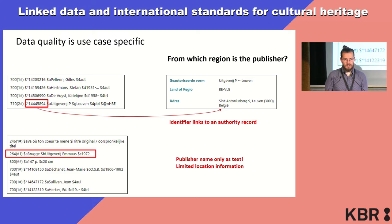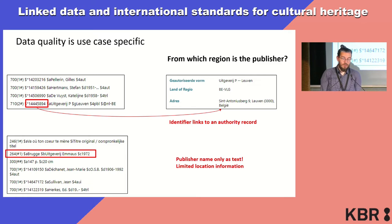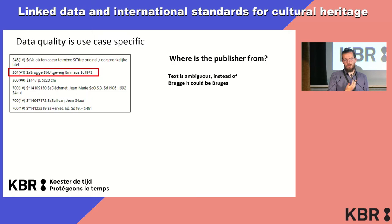Unfortunately, the second record only has text available — limited location information. You would need another data source in order to check in which region 'Brugge' is in this case and where the publisher is from. And that's actually the problem, because text is very ambiguous. In this case it's written 'Brugge', but it could have been 'Bruges' if the cataloguer was French-speaking.